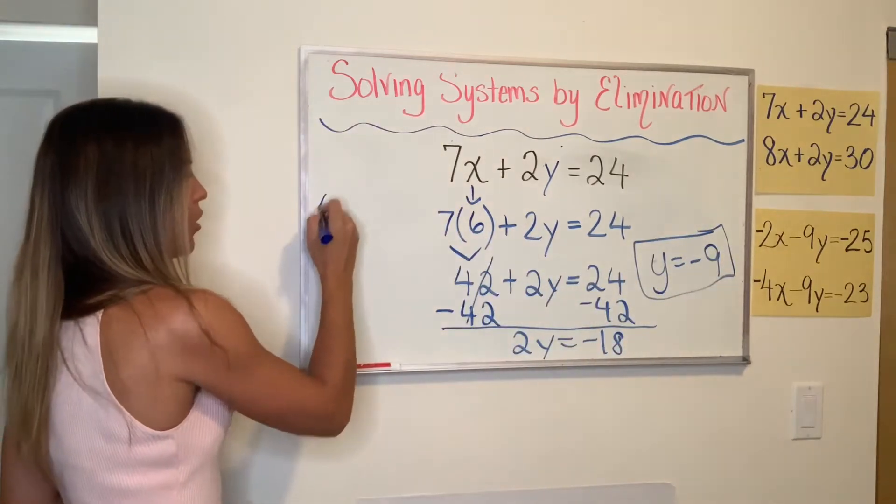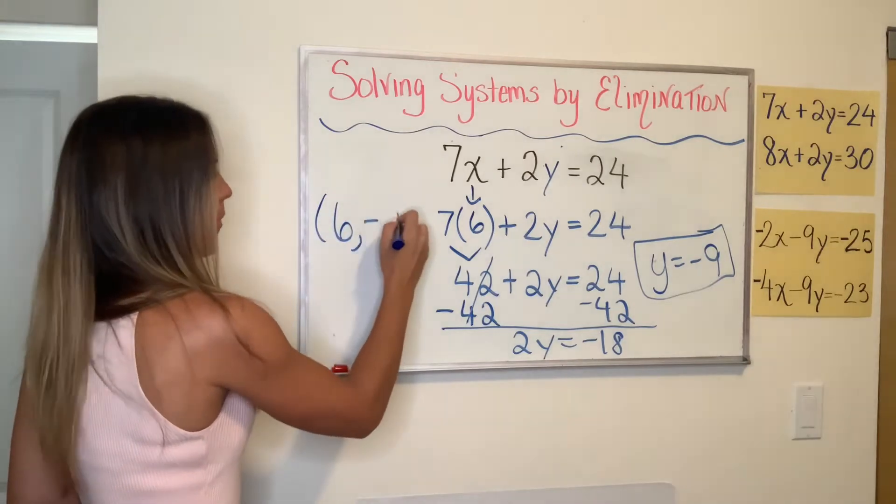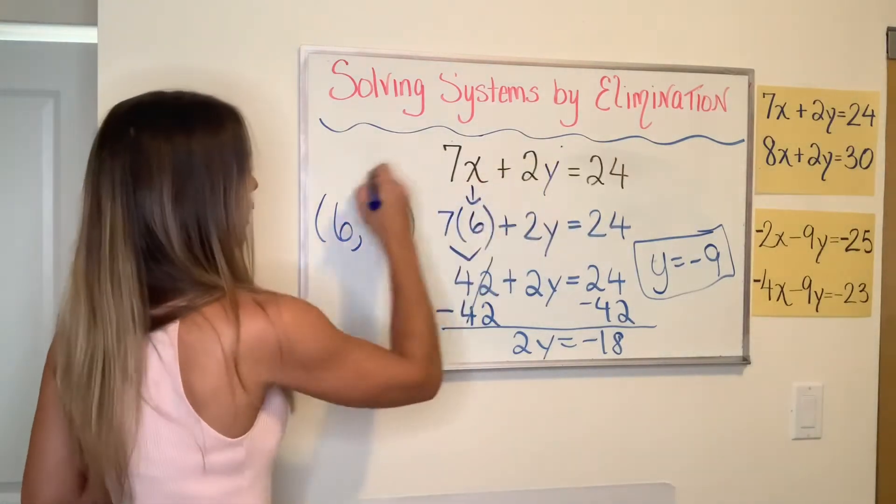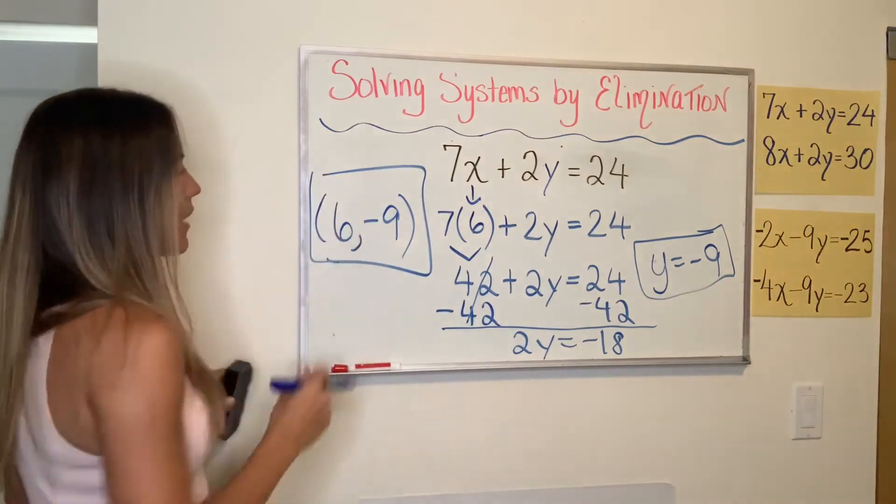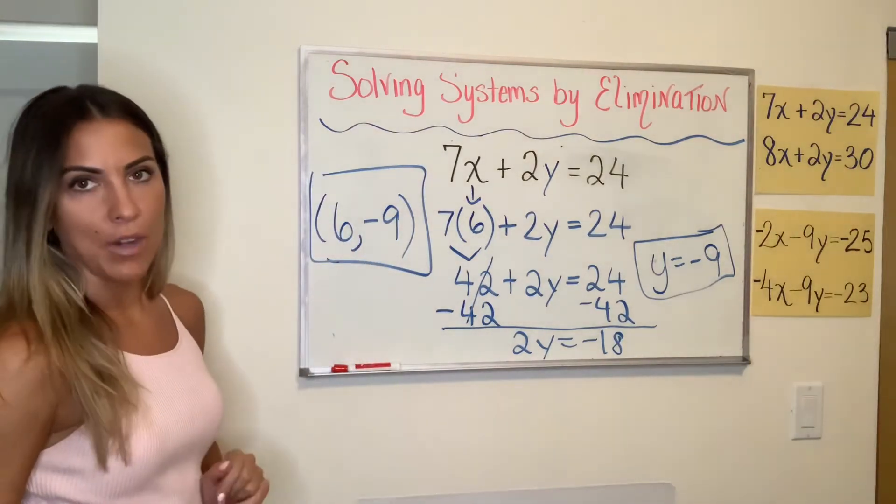I already found the X value earlier, which was six. So that means that these two lines, the two on the yellow paper, if I graph them would intersect at the point (6, -9).